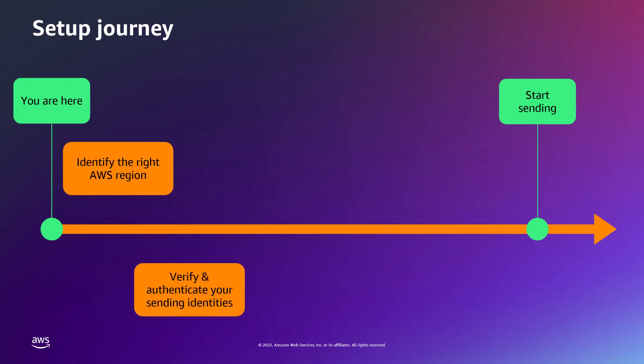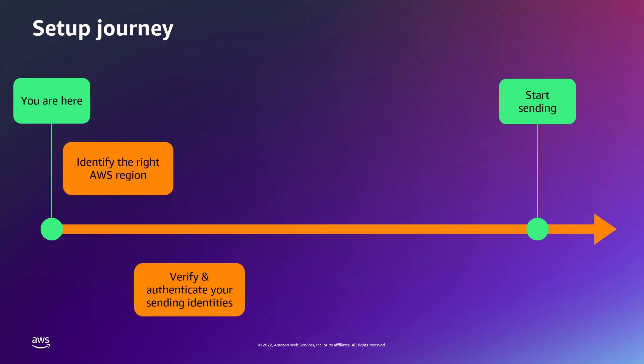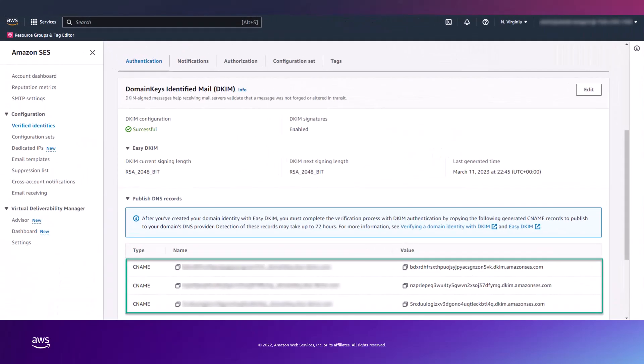The second step is verifying and authenticating your sending identities. A verified identity refers to a domain or email address. In most cases, creating a domain eliminates the need for creating and verifying individual email addresses. Part of creating a domain identity is configuring its DomainKeys Identified Mail, also known as DKIM. DKIM is an email authentication method that SES uses to verify domain ownership, while receiving mail servers use it to validate email authenticity. After creating your domain identity and configuring DKIM, you must complete the verification process with your DNS provider. If you have selected Easy DKIM, you simply need to copy the 3 CNAME records from the SES console and add them to your DNS provider.